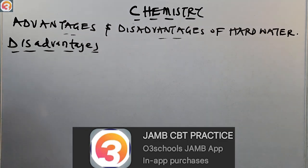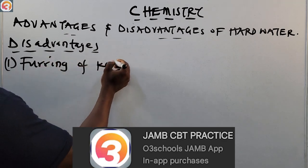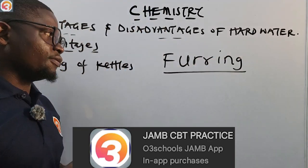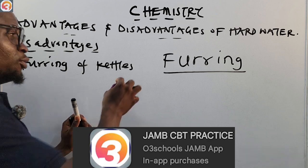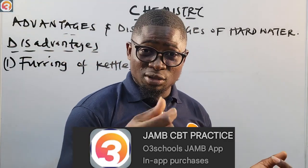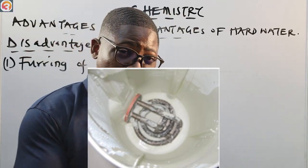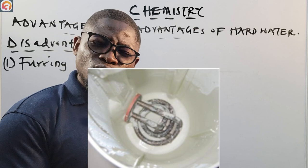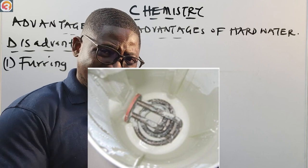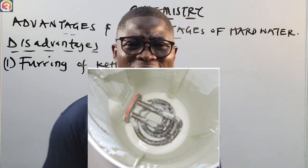Disadvantage number one is furring of kettles. Those of you that have kettles or boilers in your house — electric ring boilers — you will see that after using them for some time, some whitish substances attach themselves to the inside of those kettles. I'm showing you a picture of a kettle or boiler that has undergone furring.